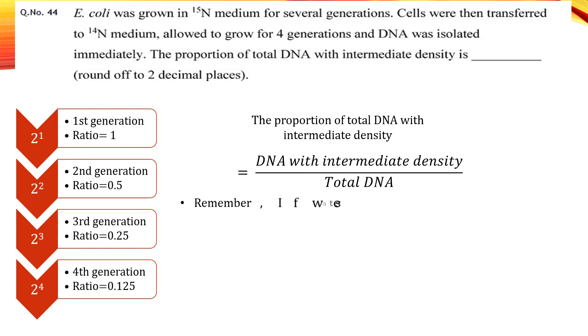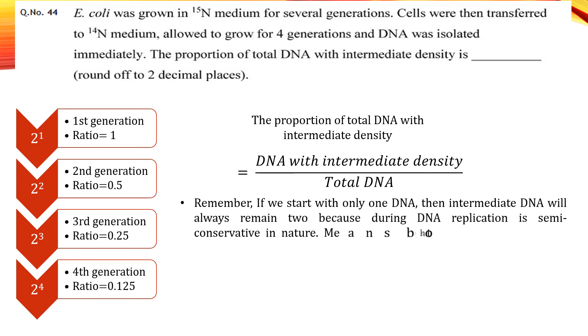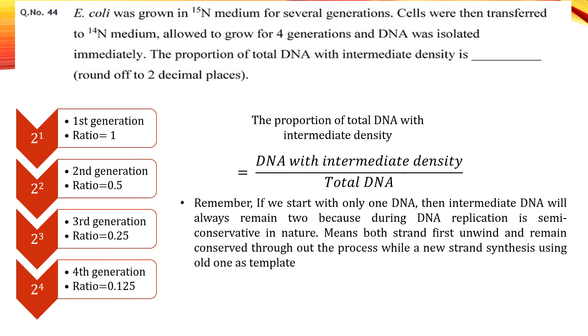But here, as we understand that there were only 2 intermediate DNA molecules throughout the generations, we can directly find the ratio by dividing 2 with the total possible DNA in the 4th generation, and that is 2 to the power 4. This is because DNA doubles with every generation.